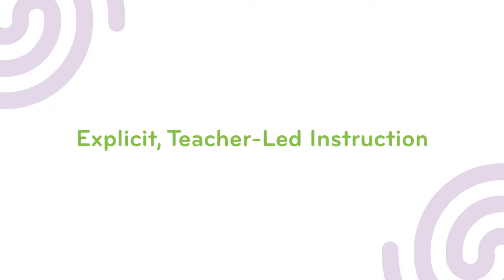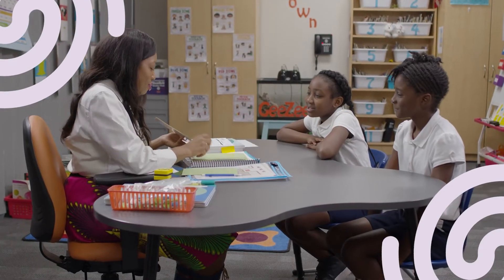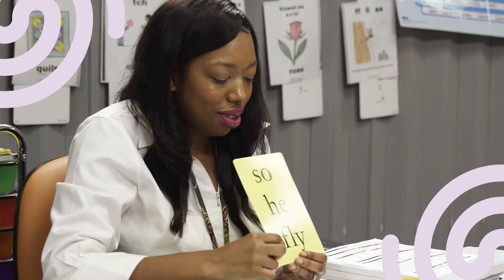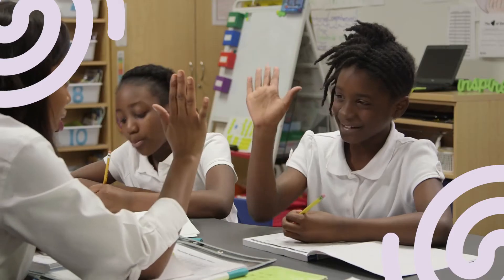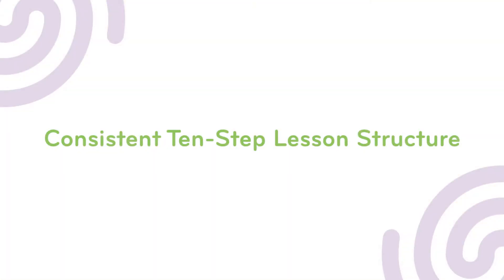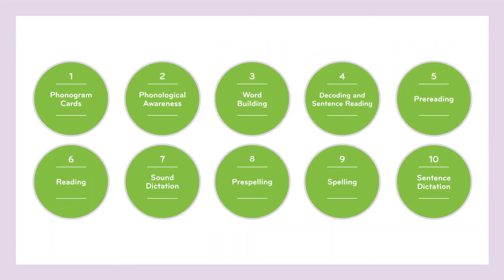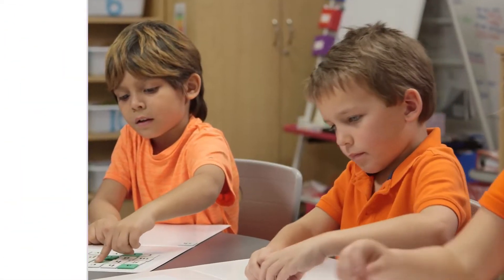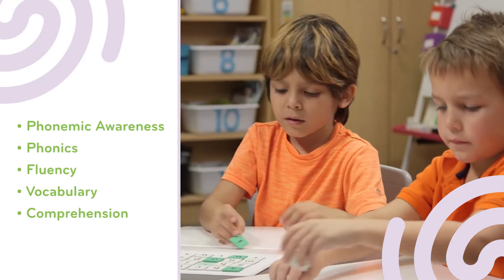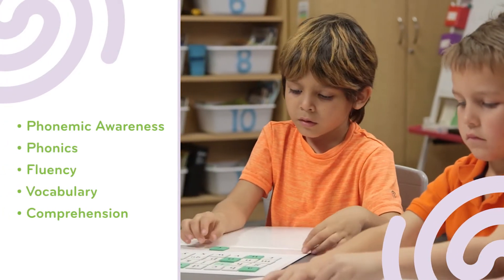Teachers lead their students through every lesson activity, working closely with them all along the way. We've built Spire around a systematic, sequentially structured 10-step lesson plan that addresses all five critical areas of reading. It's research-proven and highly effective.